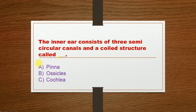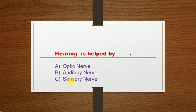Option A: Pinna, Option B: Ossicle, Option C: Cochlea. The correct option is Option C: Cochlea. Next question: Hearing is helped by dash. Option A: Optic nerve, Option B: Auditory nerve, Option C: Sensory nerve.